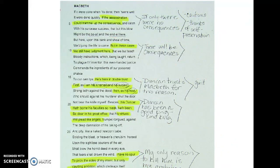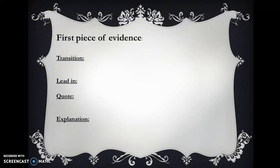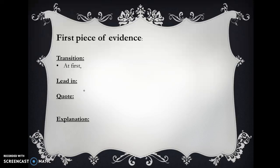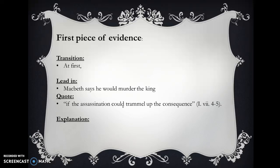Let's jump back into our presentation and begin to write. When we write a paragraph, any paragraph, we need two pieces of evidence and a topic sentence we will compose later. For the first piece of evidence, I chose something that shows he is willing to kill the king if there were no consequences. So I need the transition 'at first,' then a lead-in — and in a lead-in we need plenty of context, who is speaking and what's going on. We say Macbeth says he would murder the king, then quote: 'if the assassination could trammel up the consequence.' We cite that as act one, scene seven, lines four through five.